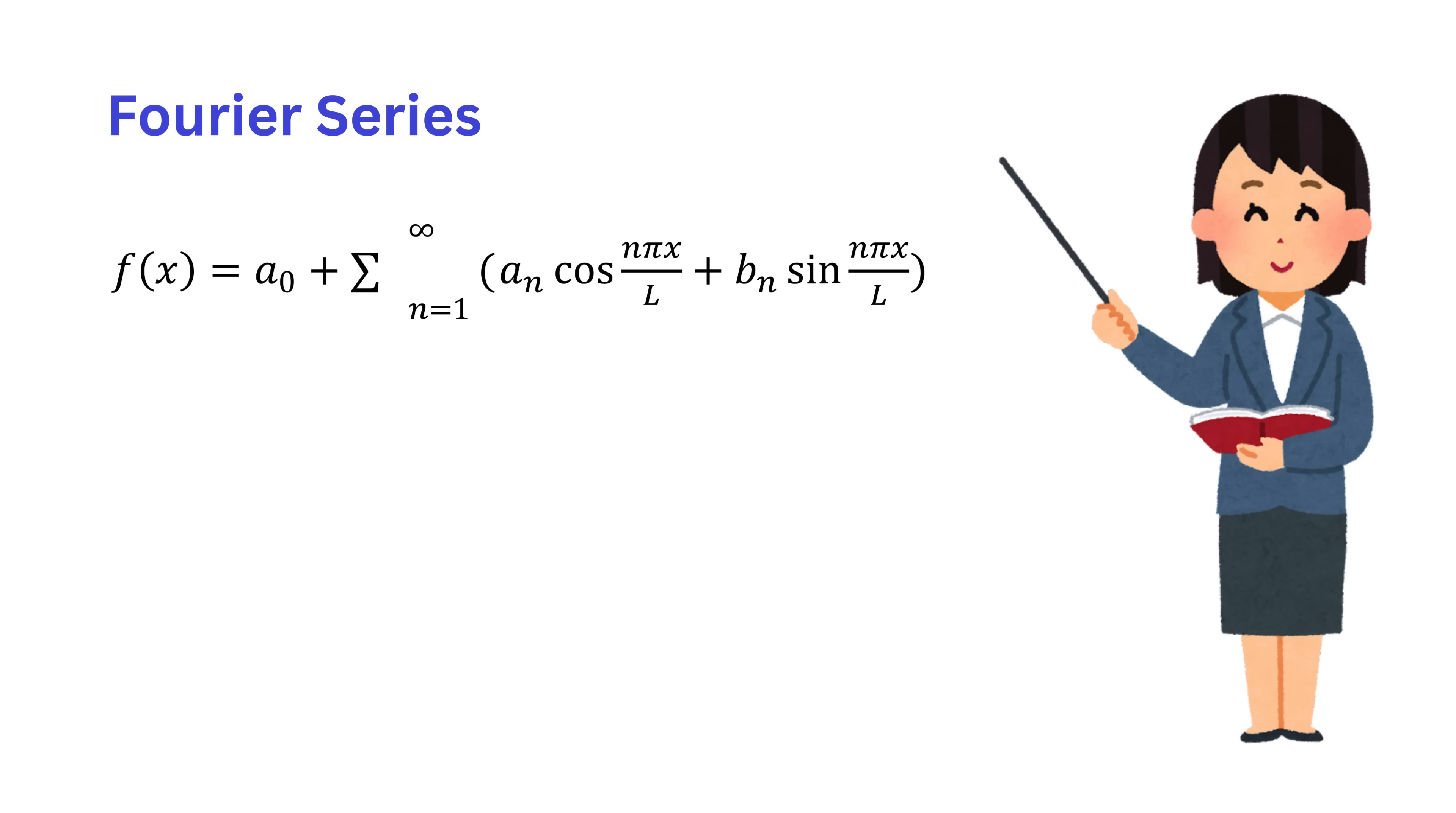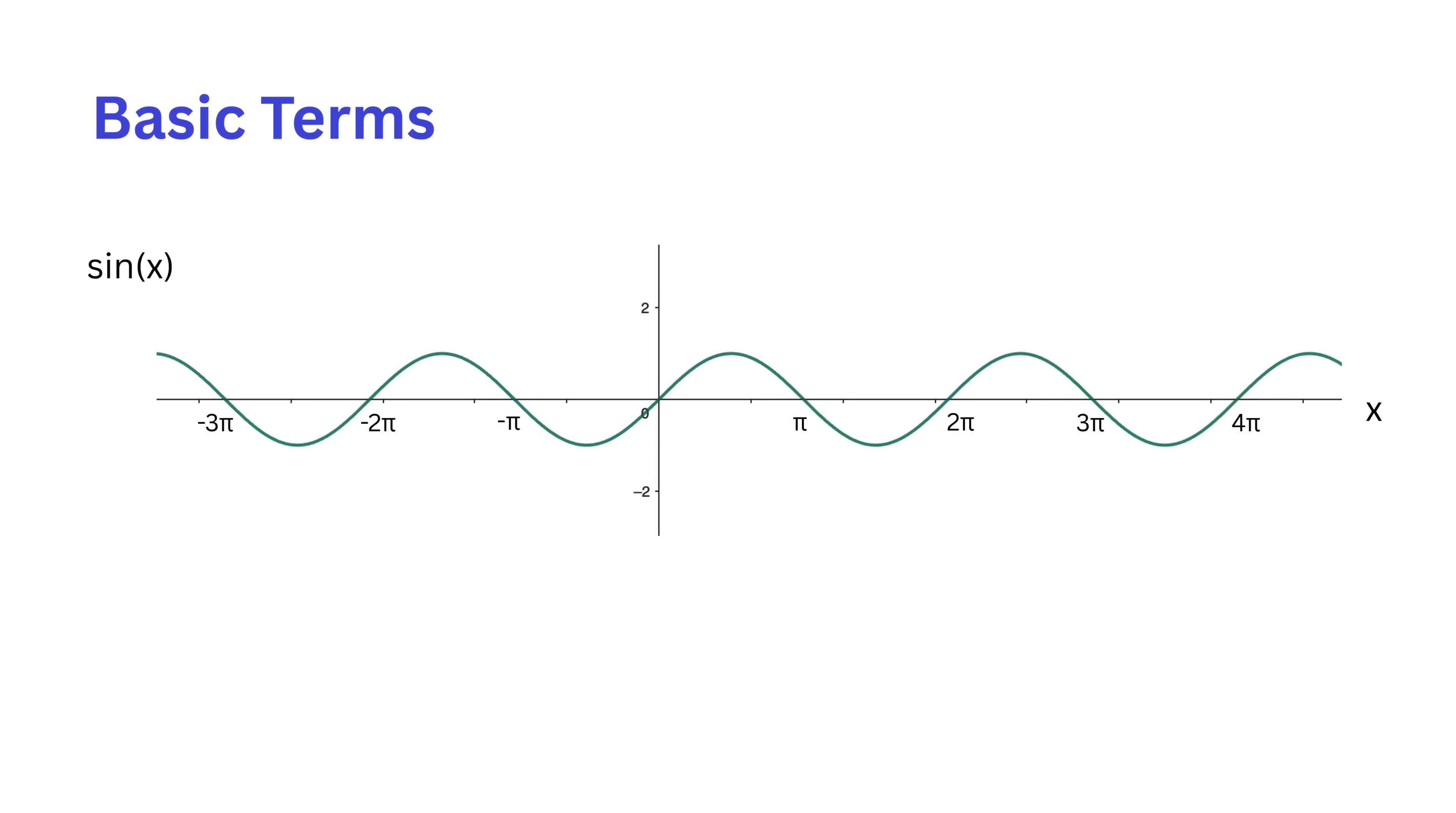Before we move forward, let us understand a few terminologies. This is the graph of sin(x) with respect to x, and this is the graph of cos(x) with respect to x. The distance on the x-axis after which the shape repeats is called the period. For sin(x) and cos(x), this repeat distance is 2π. That means, if you look at the graph between 0 and 2π, and then again between 2π and 4π, both shapes look exactly the same. So we say the period is 2π.